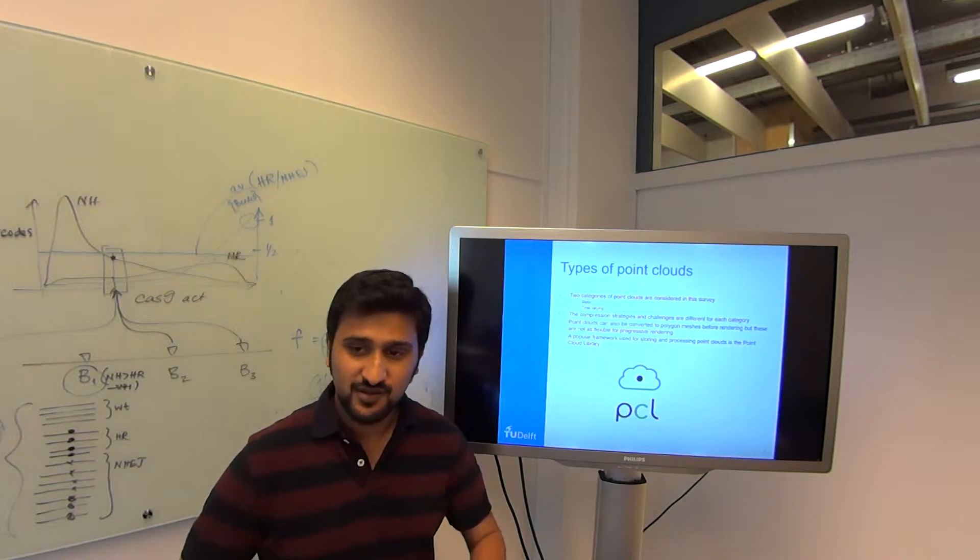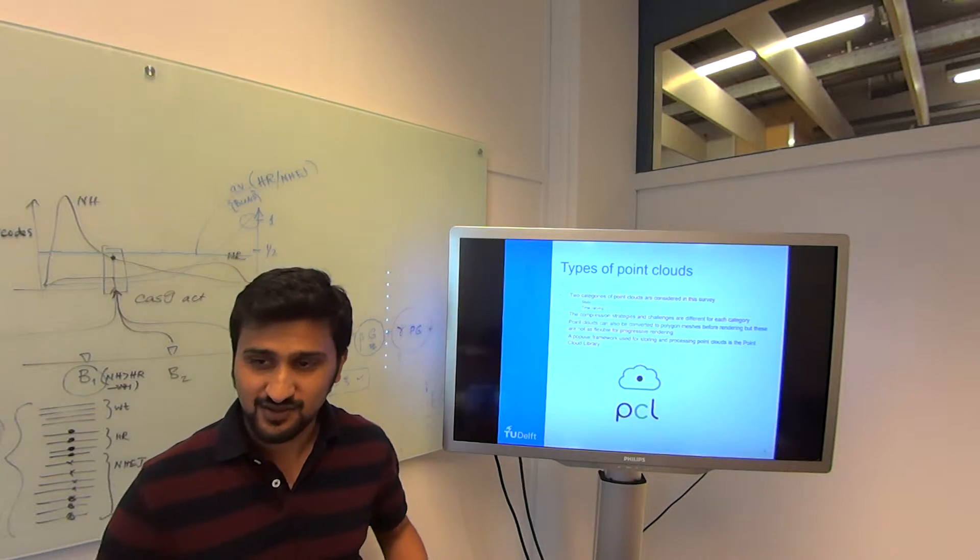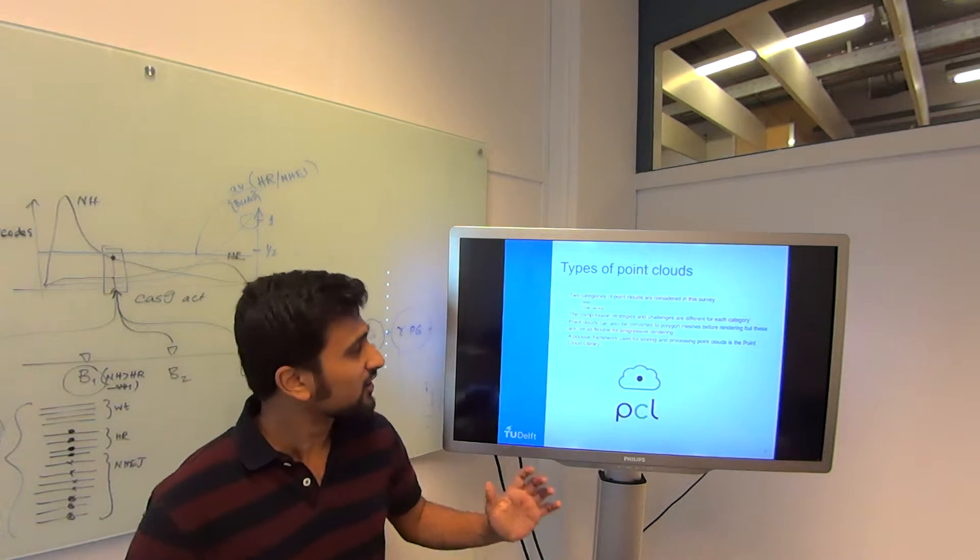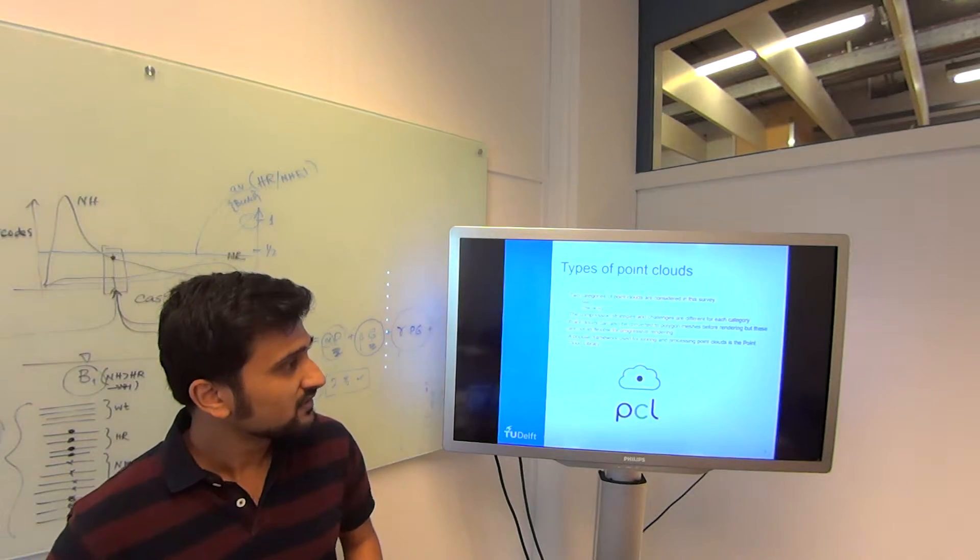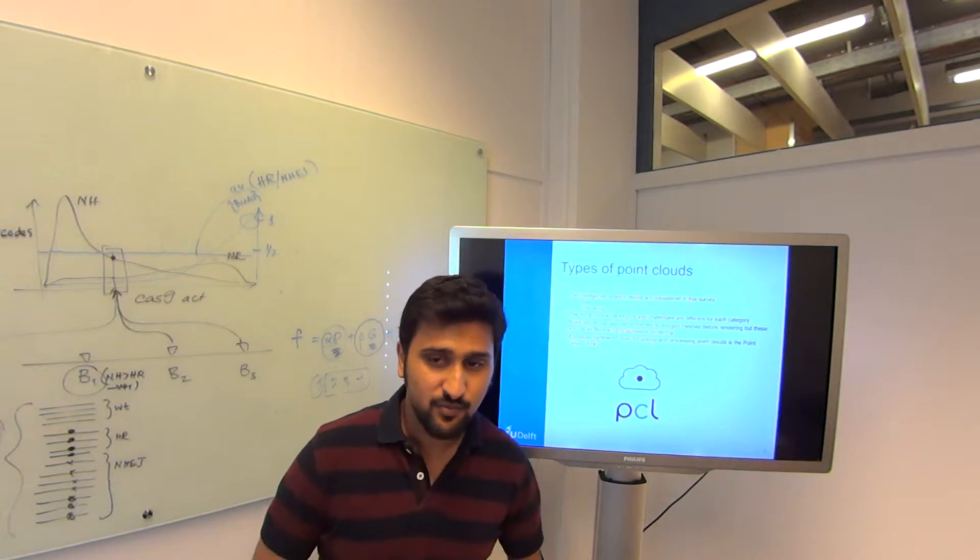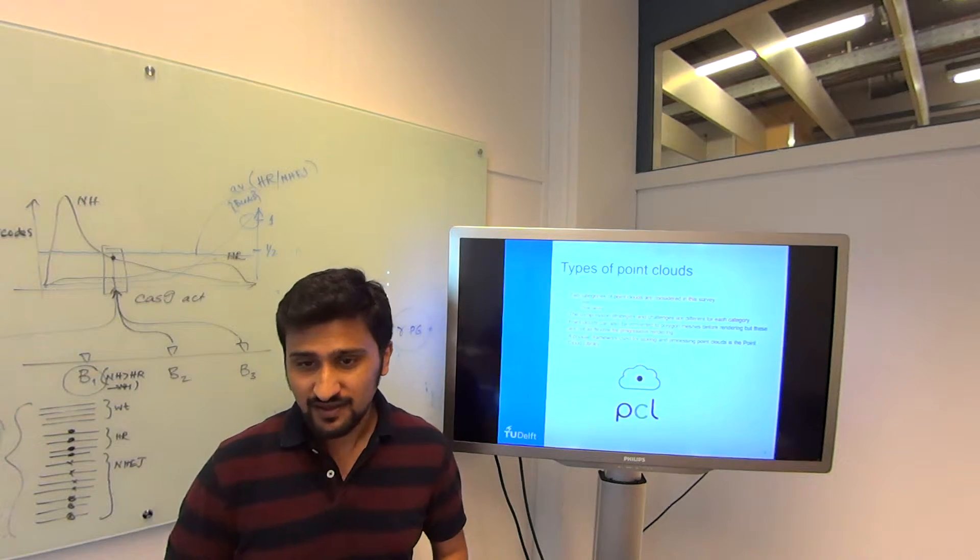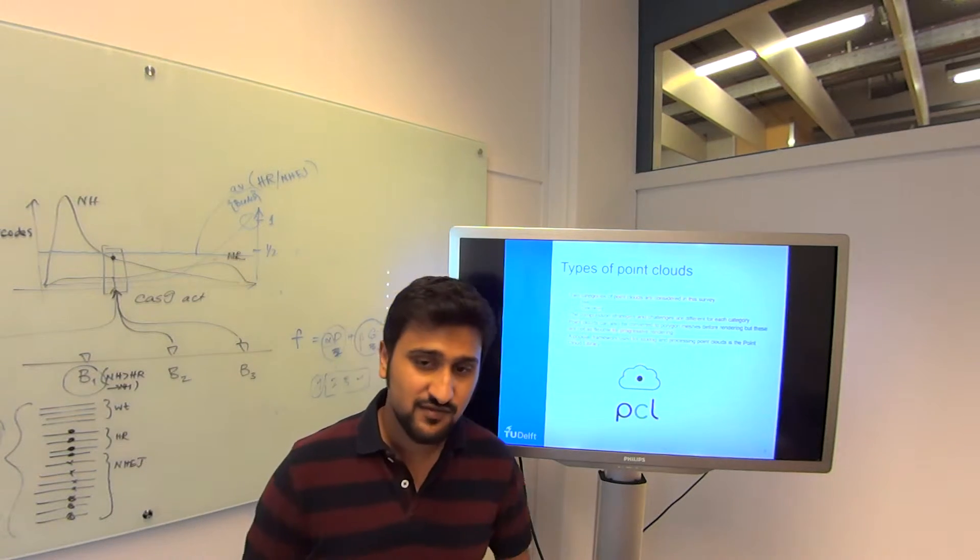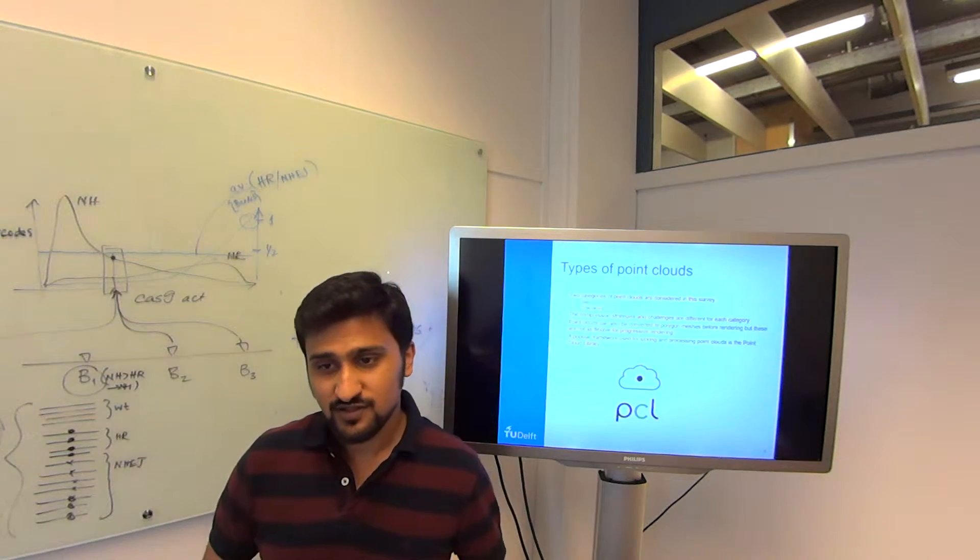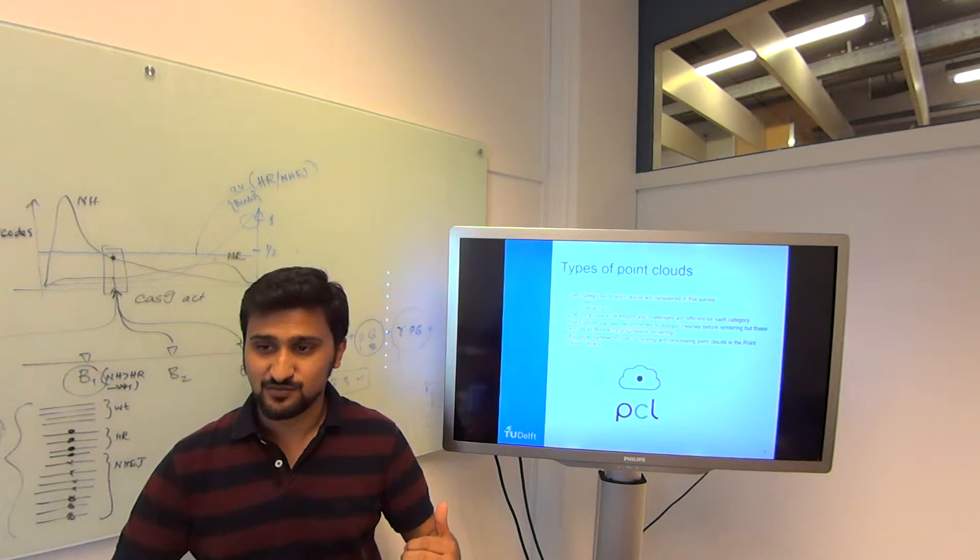I'll be dividing it into two types. One is static and the other is time varying. The compression strategies can broadly be divided into these two because the challenges are different. Another way of rendering point clouds would be to convert them to polygon meshes before you render them. And here there are two types: progressive and single rate. Progressive allows you to decode a lower resolution image just with a partial bit stream.